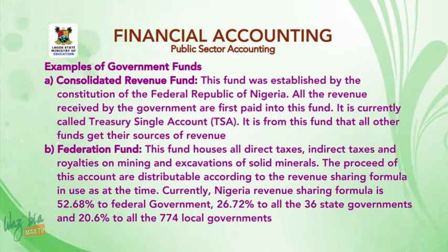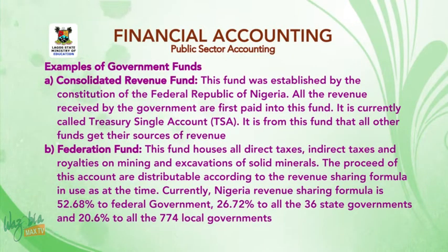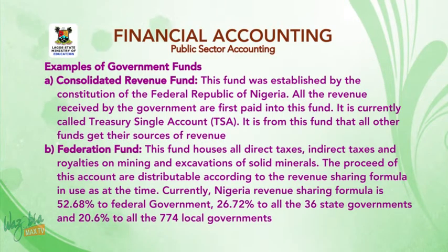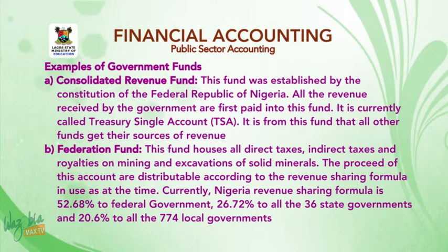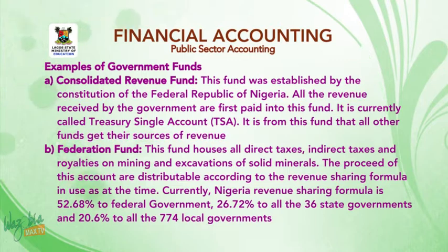Examples of government funds: A, the Consolidated Revenue Fund — this fund was established by the Constitution of the Federal Republic of Nigeria. All revenues received by the government are first paid into this fund. It is currently called the Treasury Single Account (TSA). It is from this fund that all other funds get their sources of revenue.